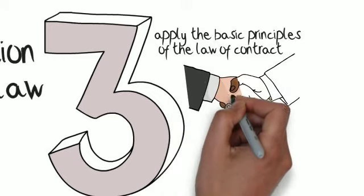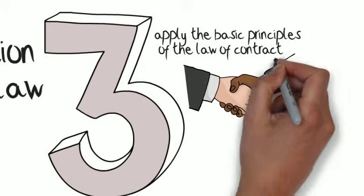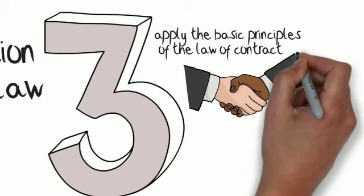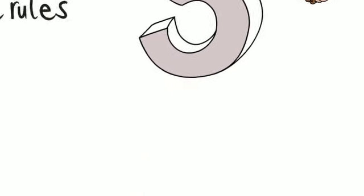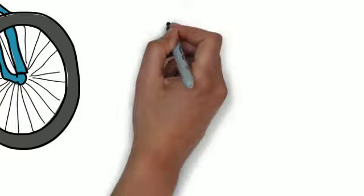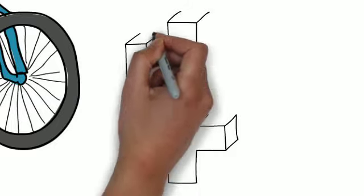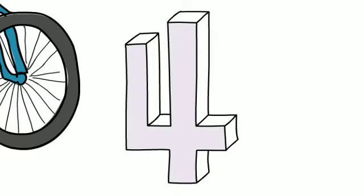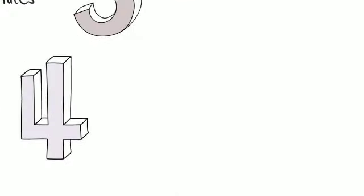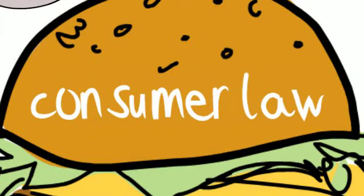Then what happens if there's a problem with the food or drink? In learning outcome 4, we look at what rights you have as a consumer. If that drink makes you ill, are you entitled to a refund? Or are you entitled to more?